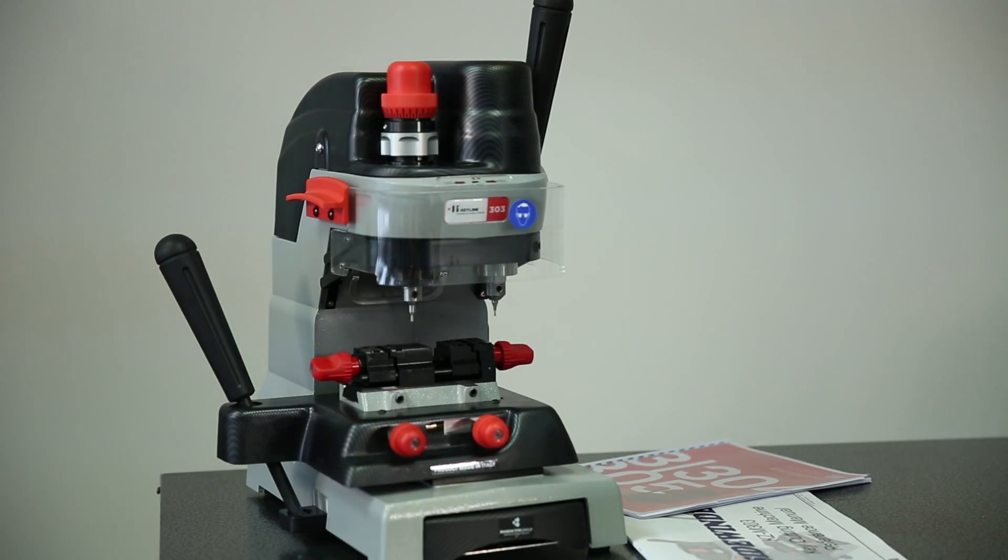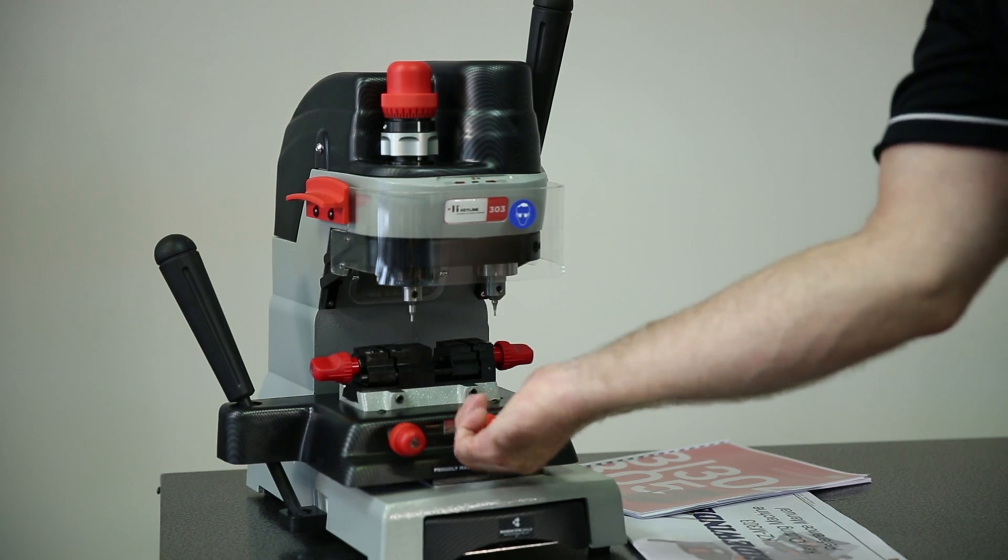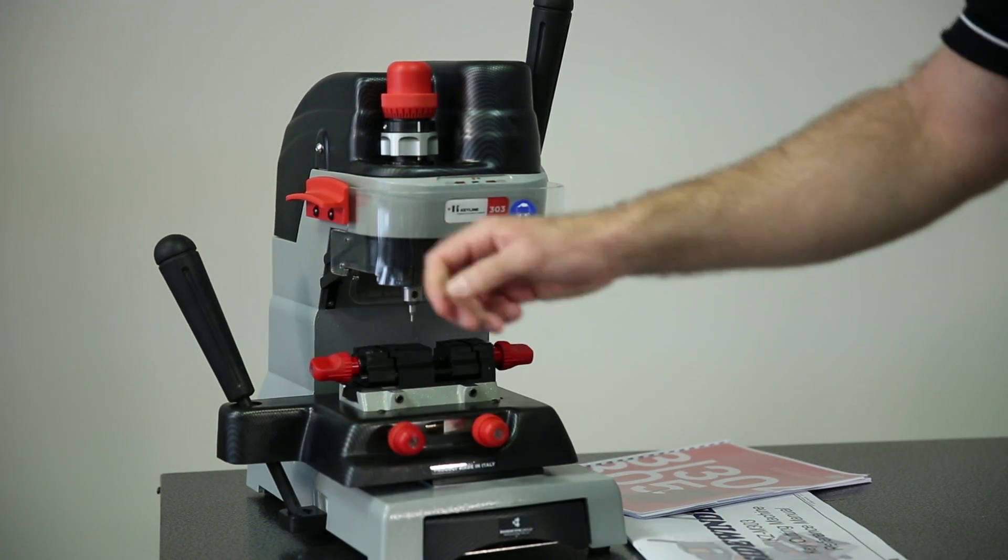The knobs on the front of the table apply tension to the table and prevent it from moving side to side.